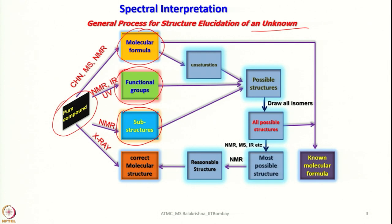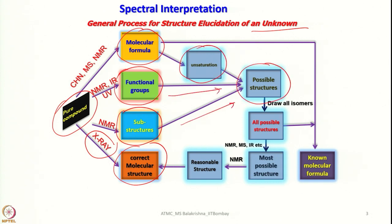NMR can also provide information about substructures — for example, whether we have a methyl group, an aromatic group, or a carboxylic group. X-ray gives a complete picture: if it is a solid compound and we can crystallize it to get a single crystal suitable for X-ray crystallography, then we can get the molecular structure. About unsaturation, we can get information from the molecular formula, and then possible structures come from all these avenues. We can draw all possible isomers and, once we have all possible structures, go back to NMR, mass, and IR data to arrive at the most appropriate structure.